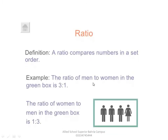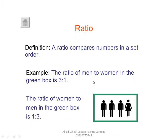Students, direct or inverse variation — first of all you have to understand the ratio. The definition of a ratio compares numbers in a set order. I will explain: the ratio of the men to women in the green box is 3 to 1.